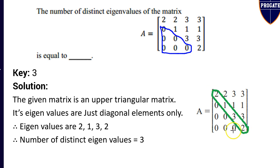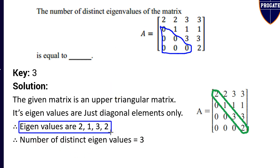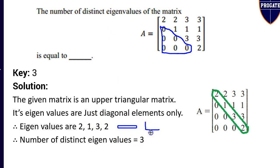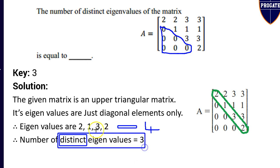Coming to the solution: the principal diagonal elements are 2, 1, 3, and 2, since all elements below the principal diagonal are 0, confirming it is an upper triangular matrix. So the eigenvalues are 2, 1, 3, 2. The question asks for the number of distinct eigenvalues, which is 3.